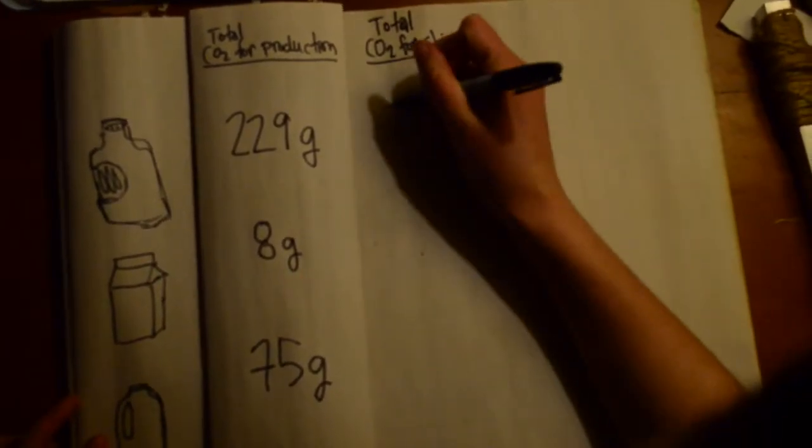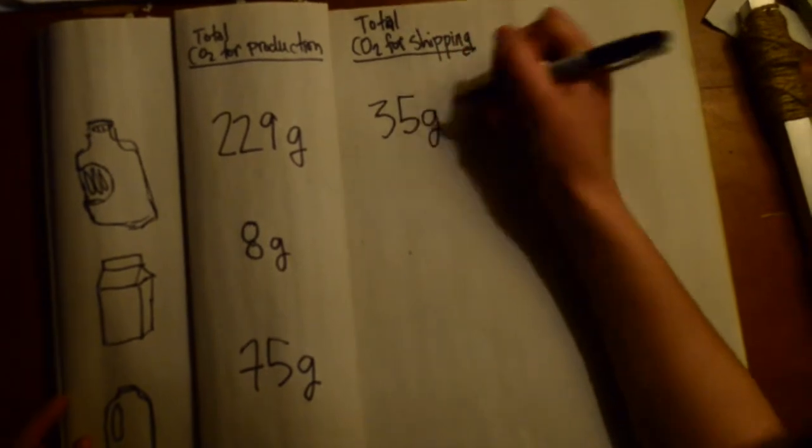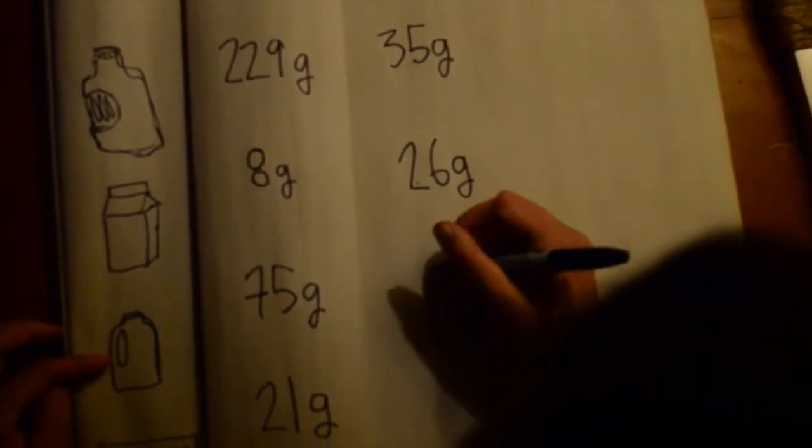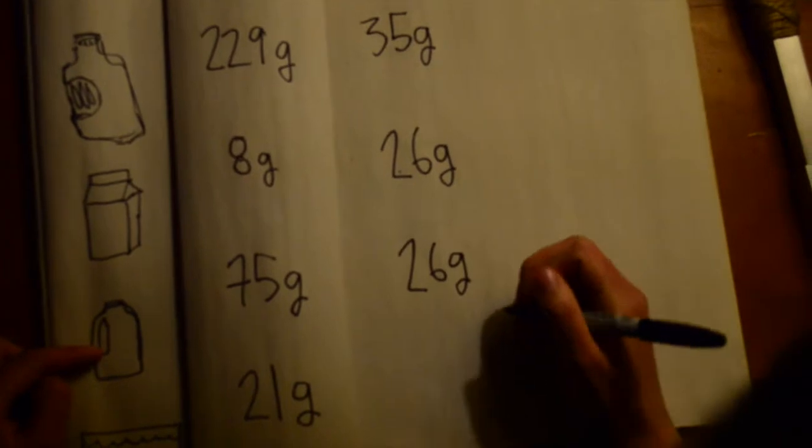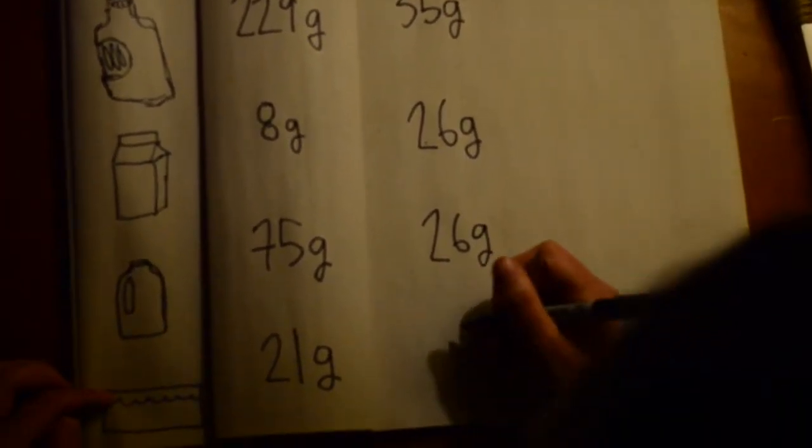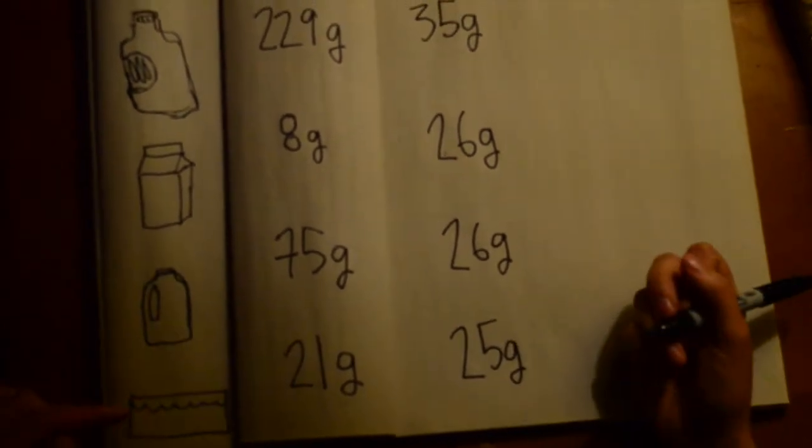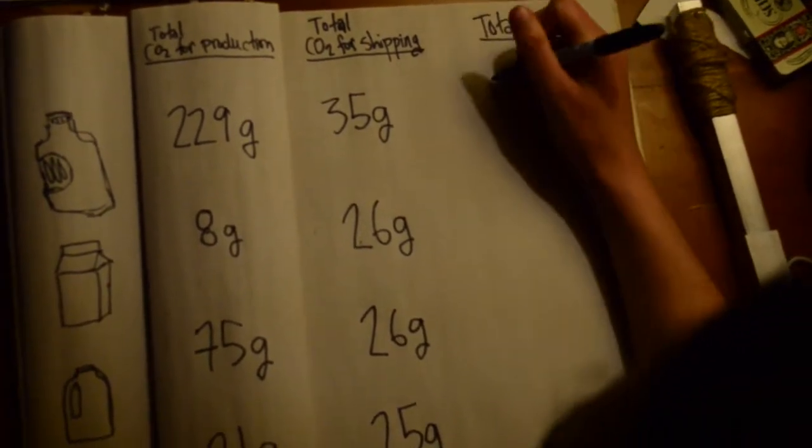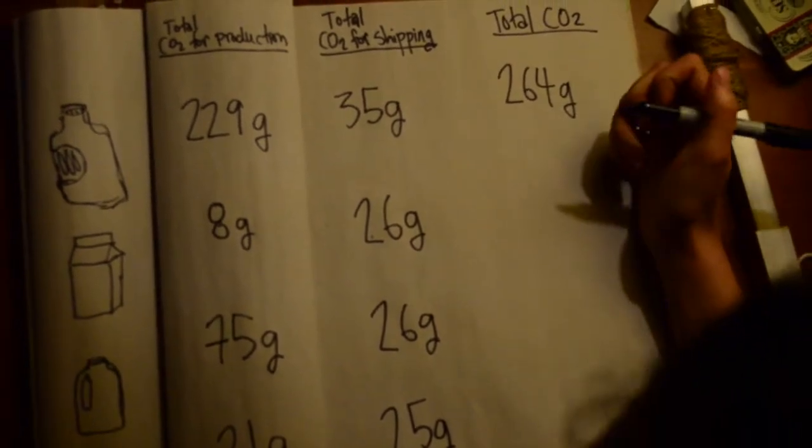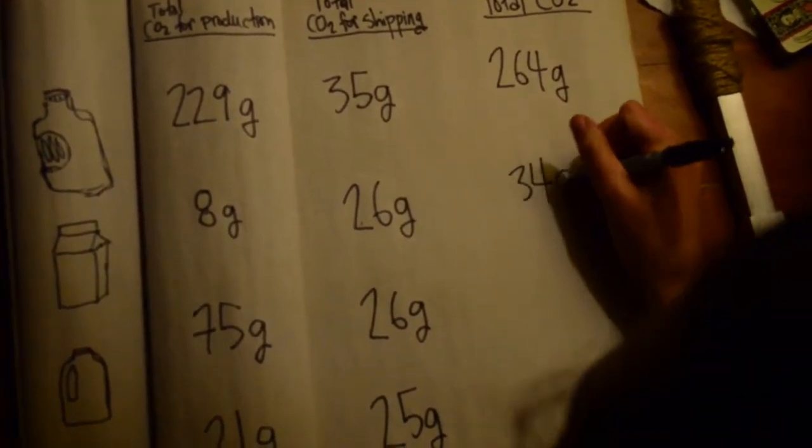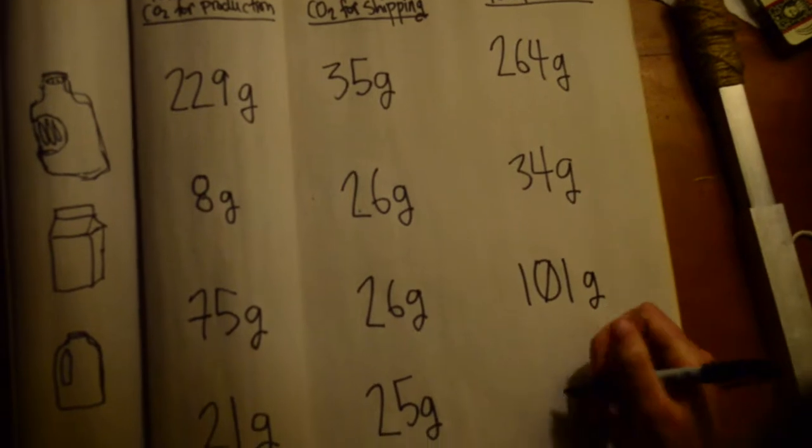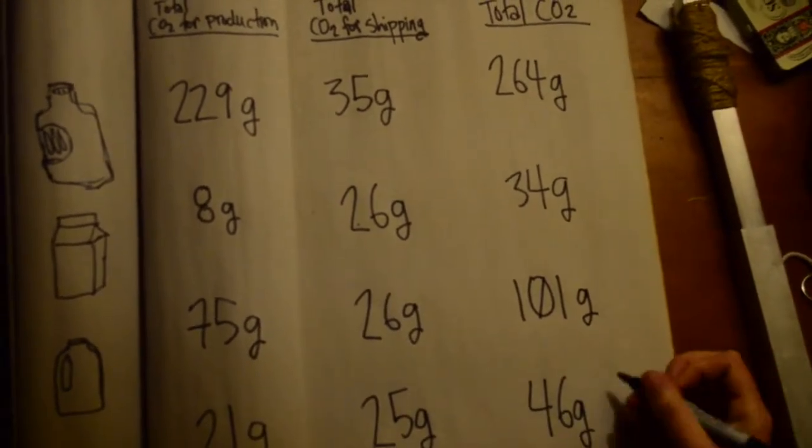Total CO2 for various containers for shipping plus the milk inside of them: 35 grams for the glass bottle, 26 grams of CO2 from the paper jug, 26 grams of CO2 from the plastic jug, and 25 grams of CO2 from the milk bag. So, that gives us total CO2 of 264 grams for the glass jug, 34 grams for the paper carton, 101 grams for the plastic bottle, and 46 grams for the plastic milk bag.